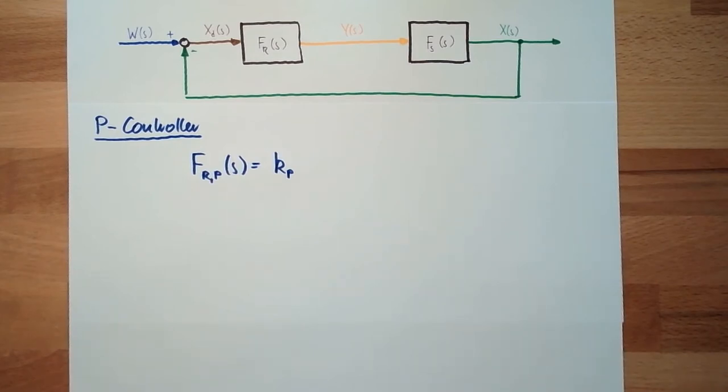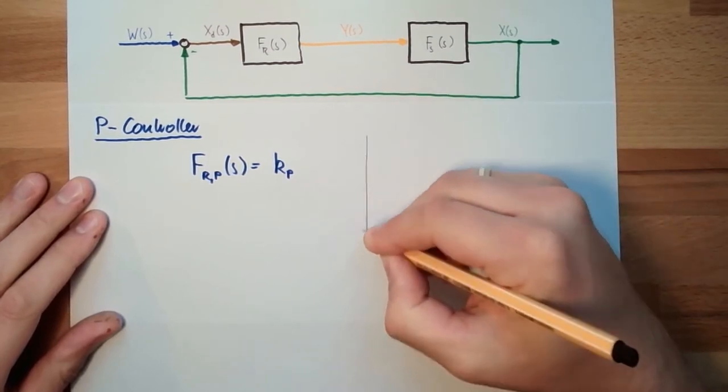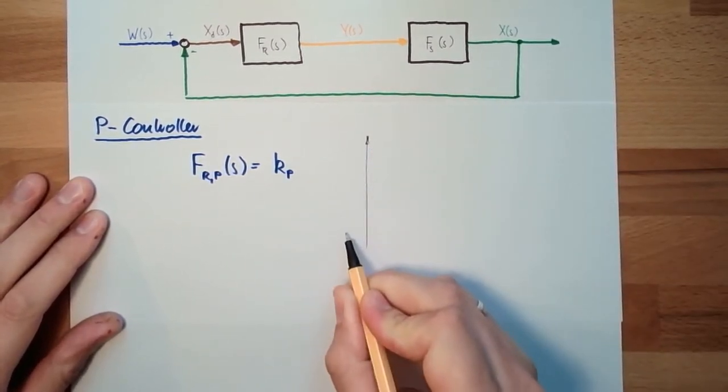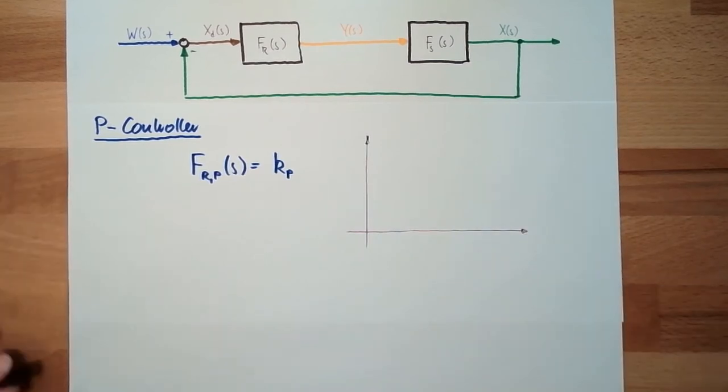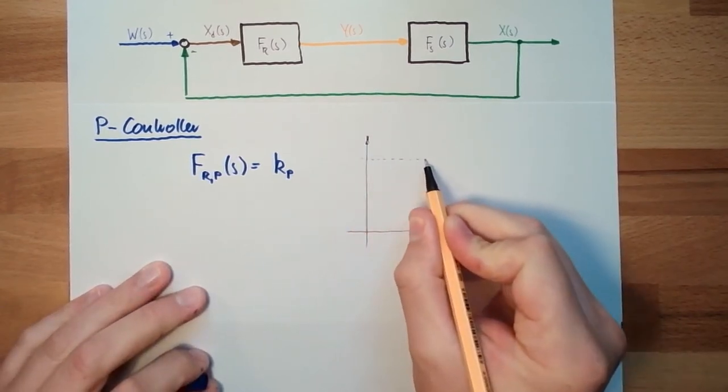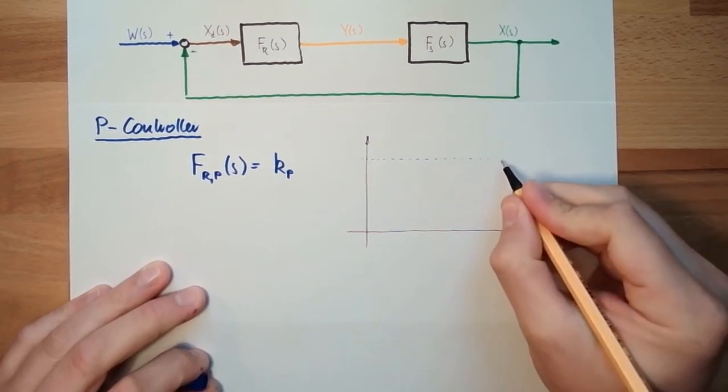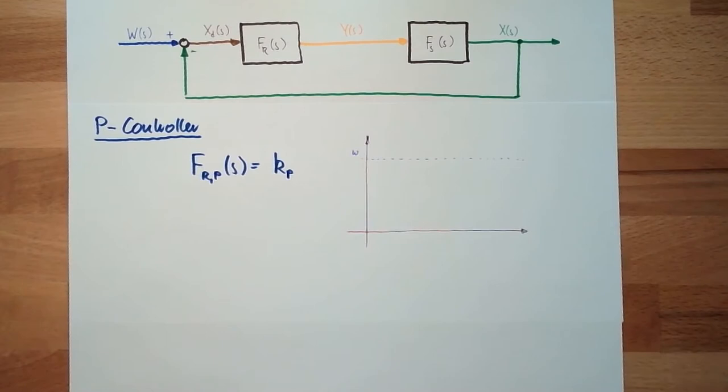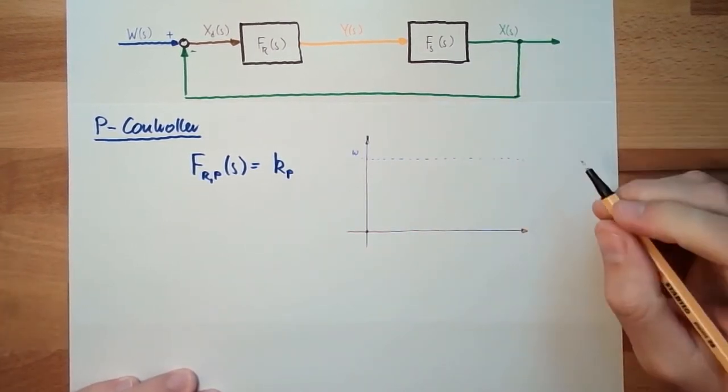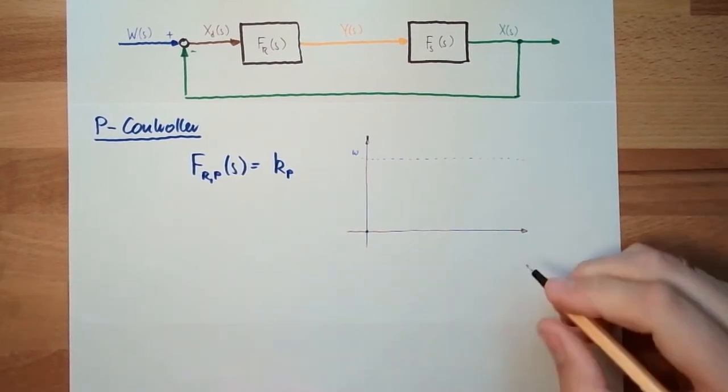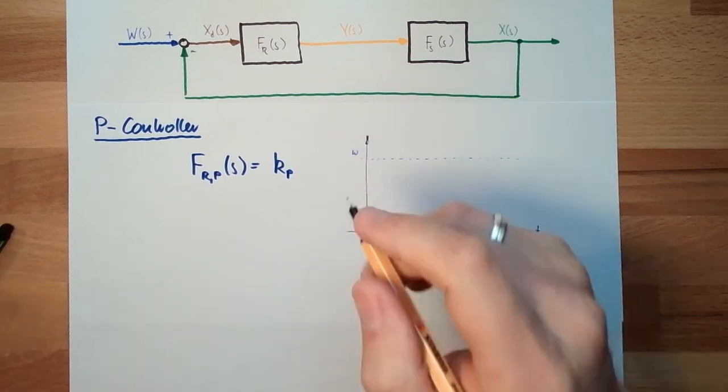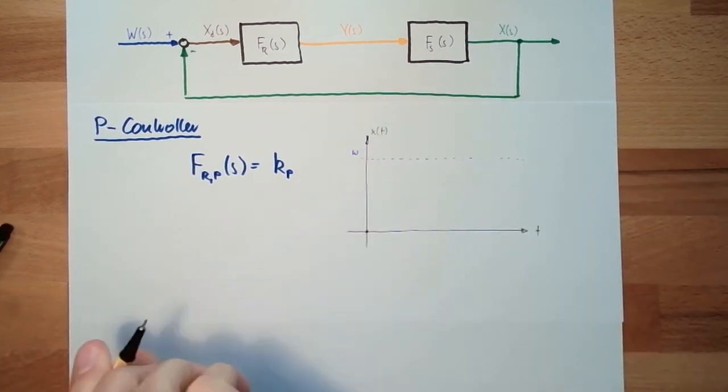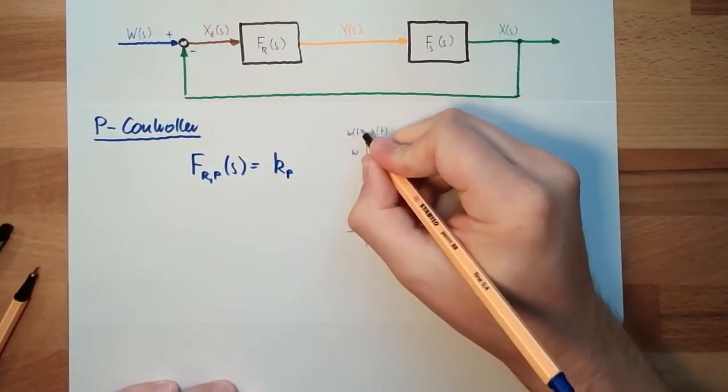Let's imagine how it is working. So there is a difference between the wanted value and the regulating variable. Let's say this is the wanted value. There is a difference, and here, let's say this is the current value of X. Here we have the time, here we have X from T and W from T.